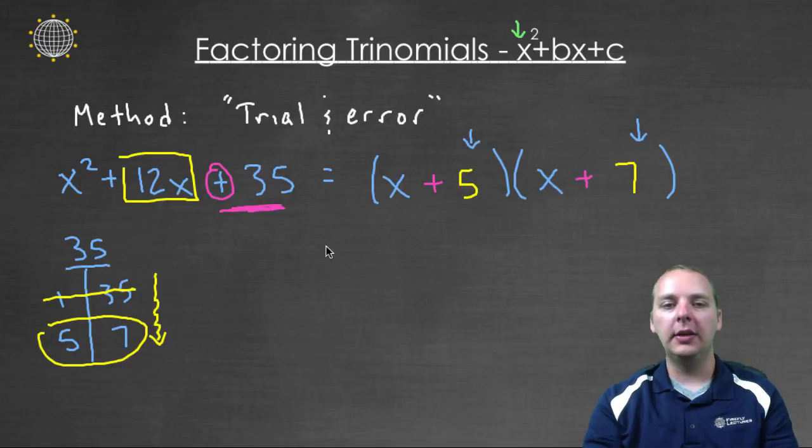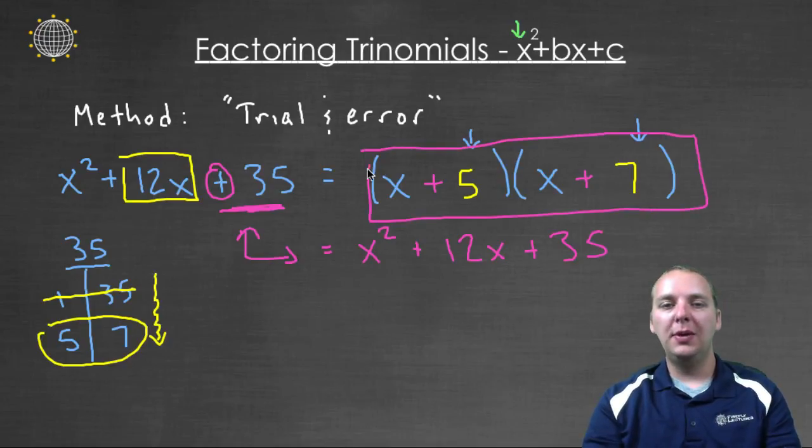let's see what this would look like if we foiled it out. X times x would be x squared, x times seven is seven x, x times five is five x. Those are like terms that add to twelve x, and five times seven is thirty five. And so we see we get the same result. And so we factored it. This right here would be the factorization, or this would be x squared plus twelve x plus thirty five in factored form. And so this is how we do trial and error. This is what we do.